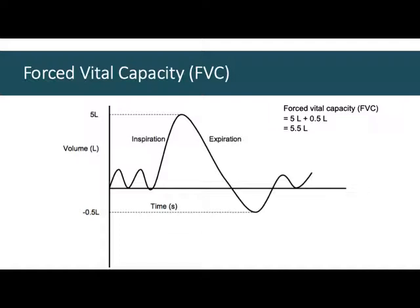Forced vital capacity: maximum breath in, then expel everything as quickly as you can. The difference between those two points is forced vital capacity. In this example, on maximum inspiration I have 5 liters of air in my lung, and after expiration I've expelled an extra half liter. So the difference between those two is 5.5 liters — that's the vital capacity I was able to expel.